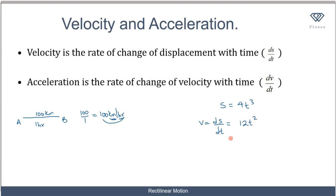So differentiating the distance function gives us the velocity. The acceleration is the rate of change of velocity with time. So once we have the velocity function, we differentiate it again to get the acceleration. For example, if the velocity is 12t², differentiating gives acceleration as 24t.